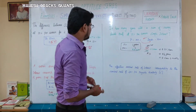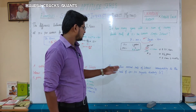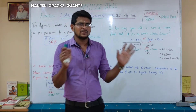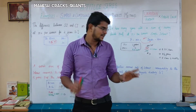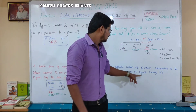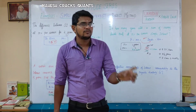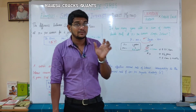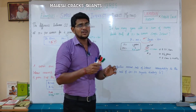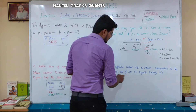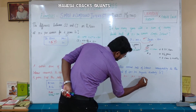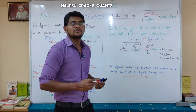Next question: the effective annual rate of interest corresponding to a nominal rate of 40% per annum payable quarterly. Since it is payable quarterly, that means every three months once, and each quarter's rate is 40% divided by 4 equals 10% per quarter. We will apply compound interest across 4 quarters.